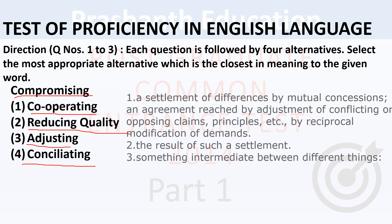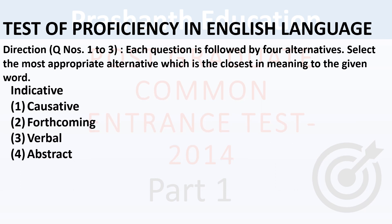Next question on 'compromising'. Compromising is a settlement of a difference by mutual consensus. The result of such settlement is sometimes intermediate between different things. In terms of scoring, losing quality is called compromising. So compromising means adjusting — the correct answer is: reducing quality is called compromising.